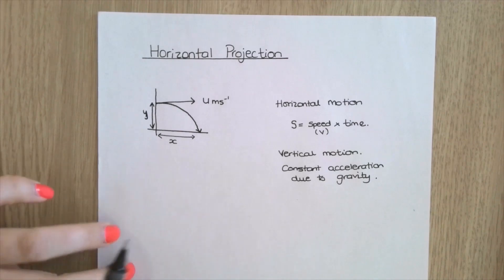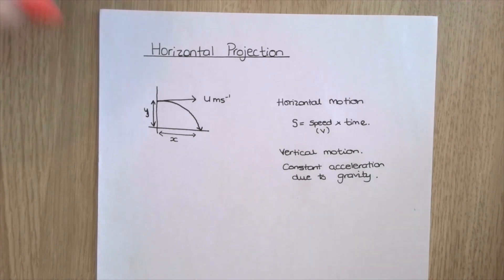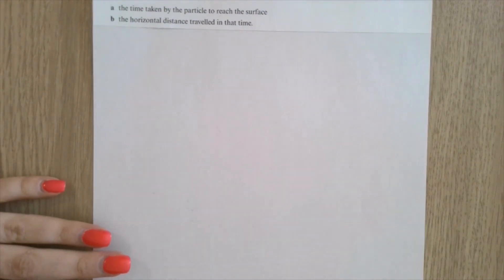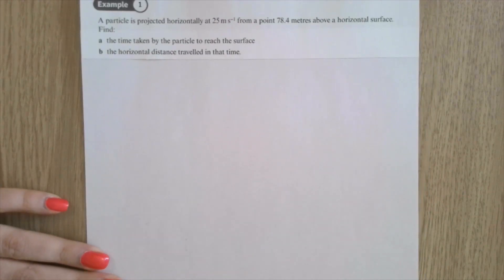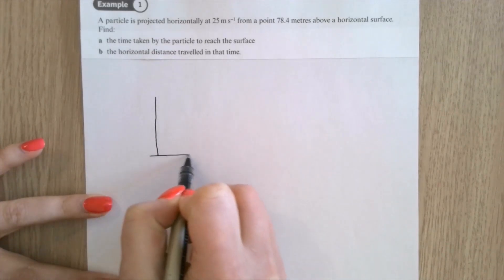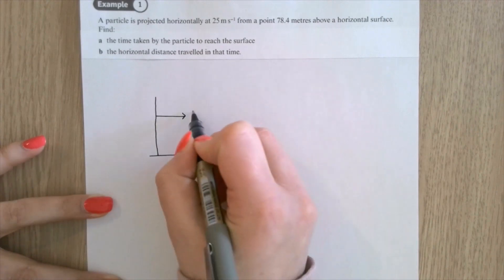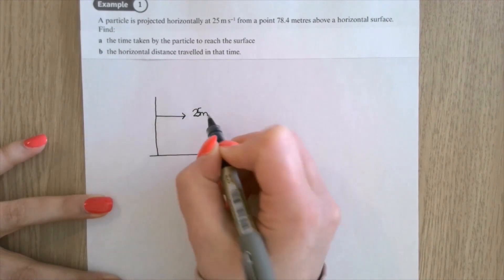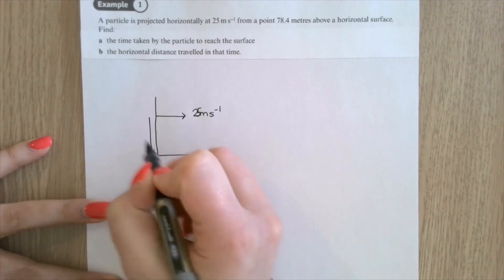Example 1 from the textbook: a particle is projected horizontally at 25 metres per second from a point 78.4 metres above a horizontal surface. Drawing this as a diagram - projected horizontally at 25 m/s from a point 78.4 metres above the horizontal. The trajectory curves downward.